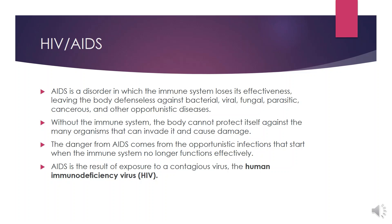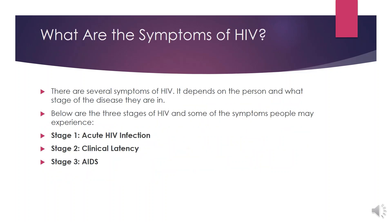AIDS is the result of exposure to a contagious virus known as human immunodeficiency virus, commonly known as HIV. To understand the symptoms of HIV, it is important to understand the stages of HIV, because symptoms differ depending on which stage the individual is in. There are three stages: stage one is acute HIV infection, stage two is clinical latency, and stage three is called AIDS.